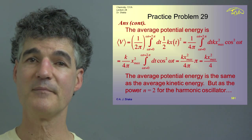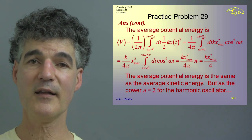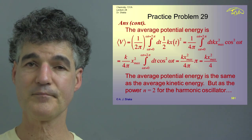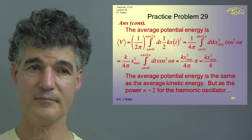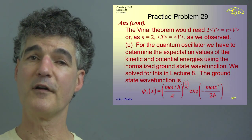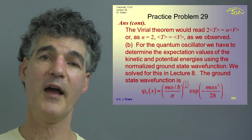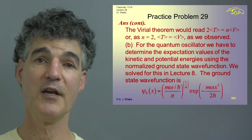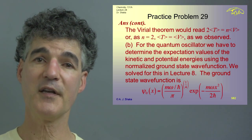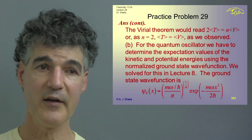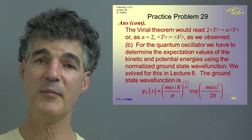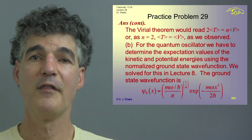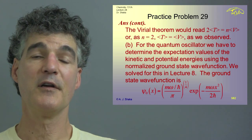The Virial Theorem says 2⟨T⟩ = n⟨V⟩. Since our potential was ½kx², n = 2, so 2⟨T⟩ = 2⟨V⟩, which means ⟨T⟩ = ⟨V⟩. That's exactly what we got, so the classical harmonic oscillator satisfies the Virial Theorem.